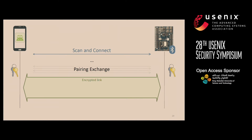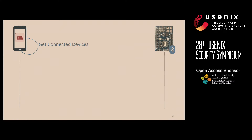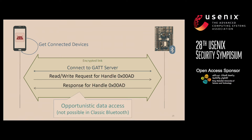That brings us to our second unauthorized data access scenario. We remove the existing pairing credentials from both devices and launch our good app again. It scans for, connects, triggers the pairing exchange, and results in an encrypted link as before. This time, though, let's say the good app doesn't disconnect. While it's still communicating with the BLE device, a malicious application running at the same time can issue a get-connected-devices command, which returns a list of Bluetooth devices currently in a connection with the Android device. The malicious app can then select our test device from that list, piggyback onto the connection, and issue read-write requests for the characteristic.